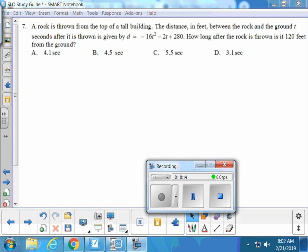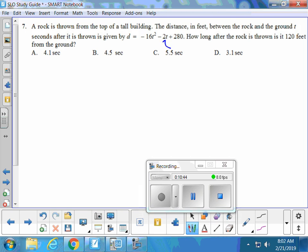A rock is thrown from the top of a building and the distance between the rock and the ground is given by this. How long after the rock is thrown is it 120 feet from the ground? So what method do you guys want to use? Since it's multiple choice, I would probably just advise you plug and chug. Just plug these different numbers in for time and see which one's going to get you to 120. Did somebody already try it? It's 3.1, it's D. Good job.